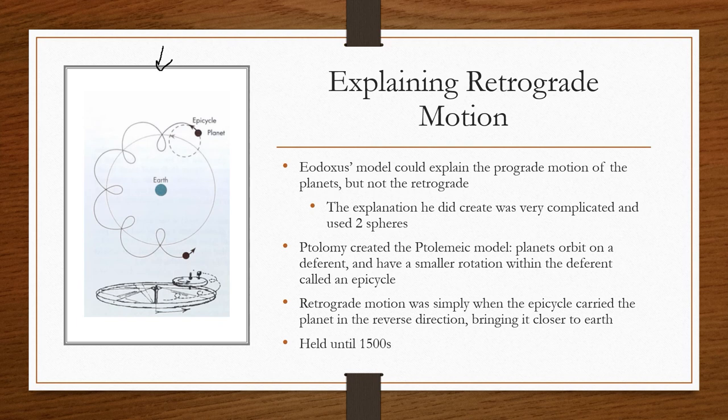Eudoxys used this model to explain retrograde motion by tipping and rotating the axis of each sphere slightly. A decent explanation of normal motion of the planets was created. However, he couldn't explain retrograde motion. Eventually, he came up with a very complicated idea containing two spheres. But it wasn't until the Roman astronomer Ptolemy created a more complex model using this epicycle formation. Basically, we have an orbit around the Earth, and then the planet has its own orbit around the orbit, which causes it to make almost like a flower effect going around the Earth.